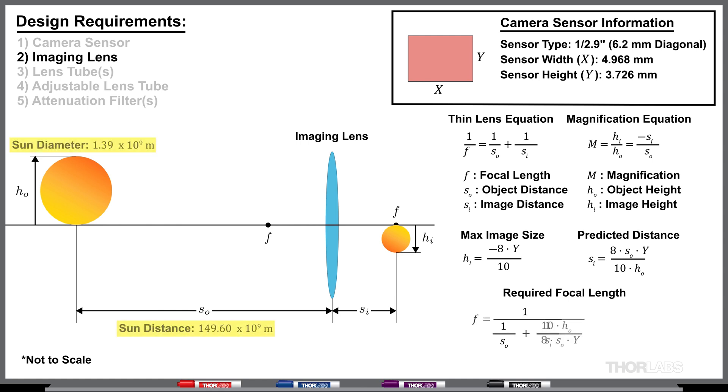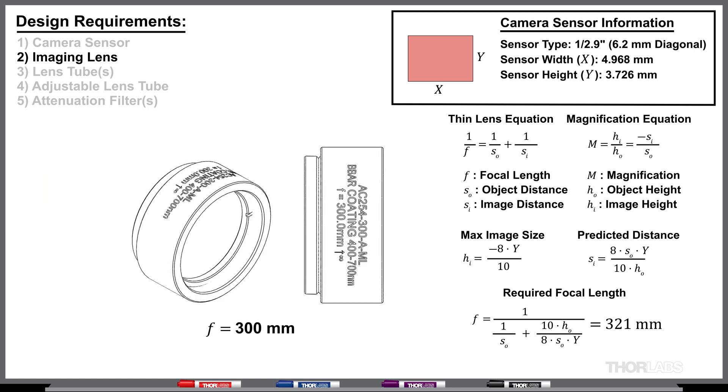Let's target 80% of the sensor height to allow some margin for keeping the telescope aligned to the sun before adjustment is necessary. With this configuration, the image will be inverted, so the image height gains a negative sign on its value. We also don't know the exact image distance from the lens, so we can rearrange the magnification equation, and then solve for the focal length. If we plug in the diameter and distance of the sun for the object size and object distance, we find a maximum focal length of 321 millimeters.